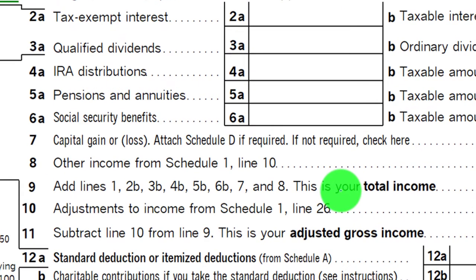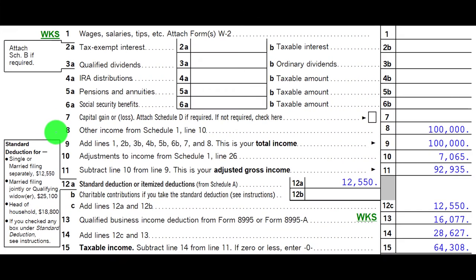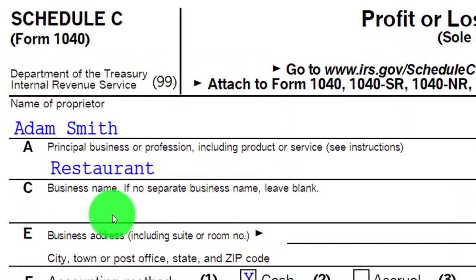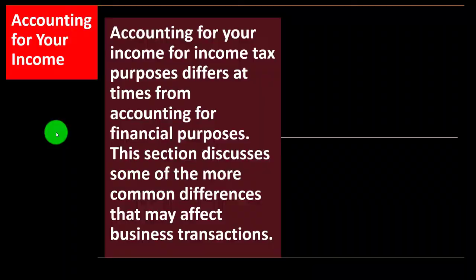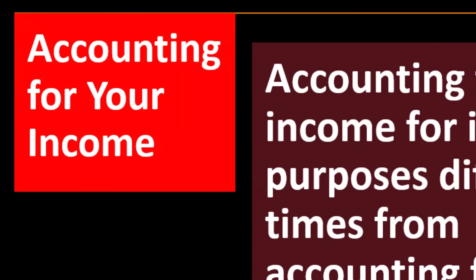With the tax return, we would have the Schedule C. The Schedule C then rolls into the Schedule 1, which then rolls into the first page of Form 1040, Line Number 8 — Other Income. The Schedule C is basically an income statement, and we're focused on the income lines — accounting for income.